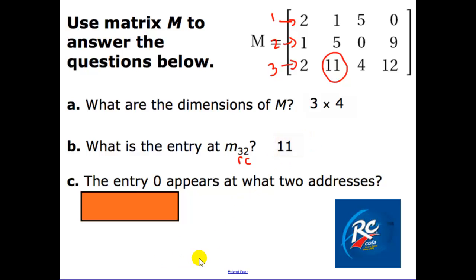And then zero appears in what two addresses? Well, zero is in row one, column four, and row two, column three.